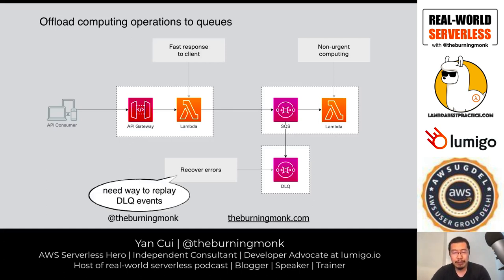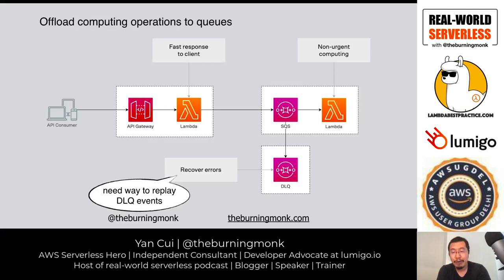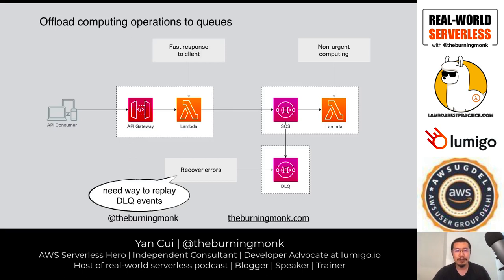Even with a DLQ, problems can occur — for example, a third-party service has an outage. You keep retrying failed messages, but they're still failing. After half an hour or an hour, many messages may have gone into the DLQ because retries are exhausted. You get an alert, look at the DLQ, identify it was a downstream outage, and now need a way to replay those events — putting them back into the main SQS queue to reprocess once the downstream system recovers.